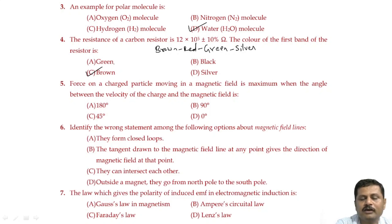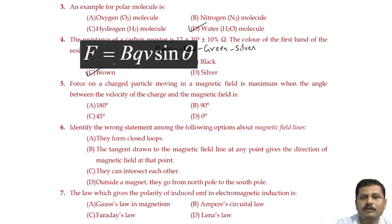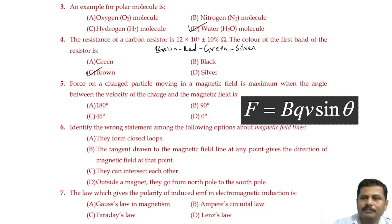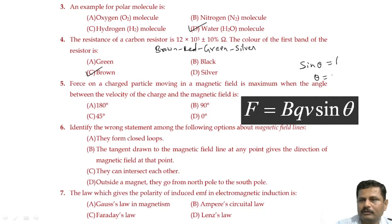The force on a charged particle moving in a magnetic field is maximum when the angle between the velocity of the charged particle and magnetic field is. The force experienced by a charged particle in a magnetic field is F = qvB sinθ, where θ is the angle between the magnetic field and velocity vector. The force becomes maximum when sinθ = 1, so θ = 90°. Option B is the right answer.